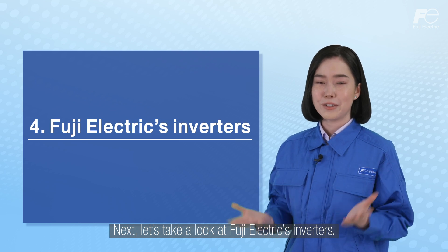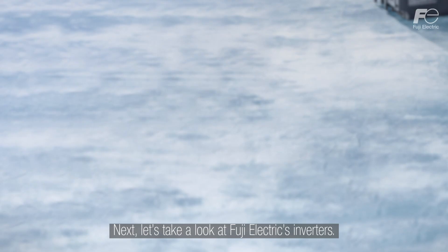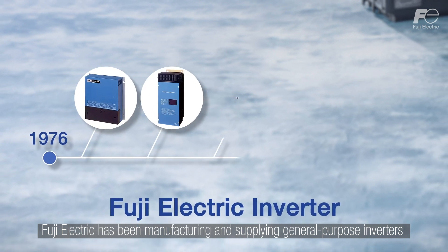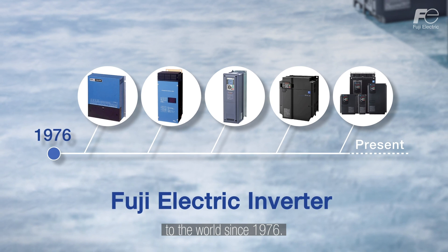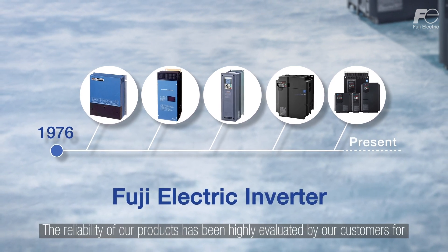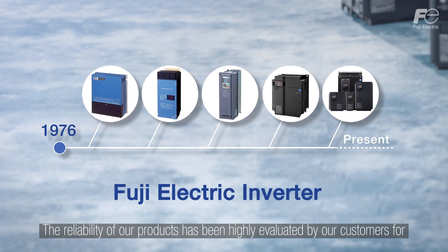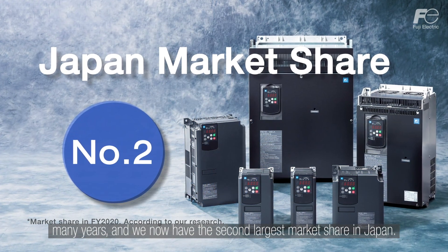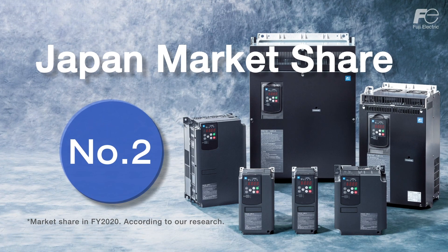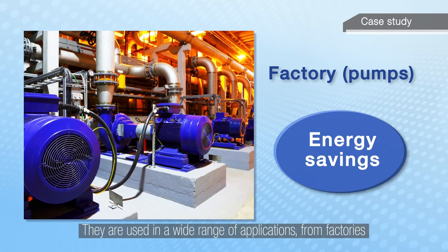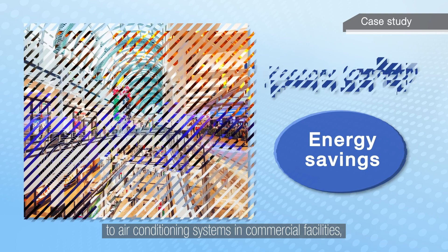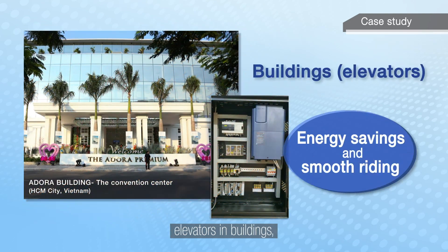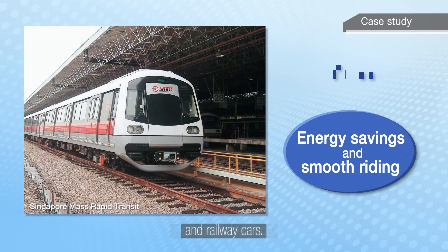Next, let's take a look at Fuji Electric's inverters. Fuji Electric has been manufacturing and supplying general purpose inverters to the world since 1976. The reliability of our products has been highly evaluated by our customers for many years and we now have the second largest market share in Japan. They are used in a wide range of applications from factories to air conditioning systems in commercial facilities, elevators in buildings, and railway cars.